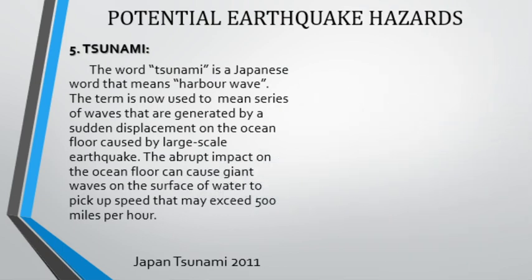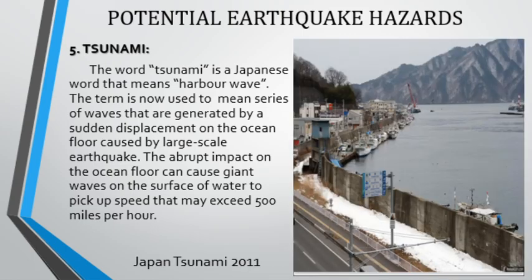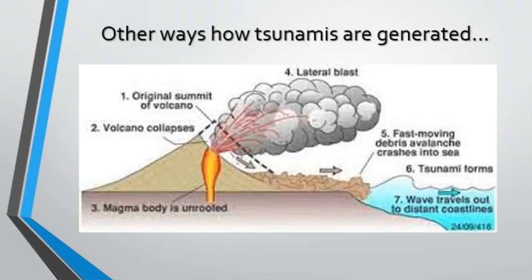The fifth hazard is a tsunami. It is used to define waves generated by a sudden displacement on the ocean floor caused by a large-scale earthquake. The abrupt impact on the ocean floor can cause giant waves on the surface of water to pick up speed of more than 500 miles per hour. This event shows a tsunami in Japan in 2011. Tsunamis are not just a common aftereffect of an earthquake — they can also be generated by a strong volcanic eruption, where a blast from debris or avalanches from a volcanic eruption crashes into the sea, forming tsunami waves that could travel to distant coastlines.